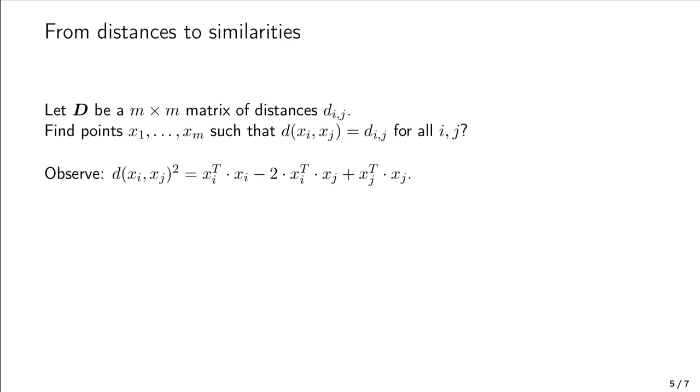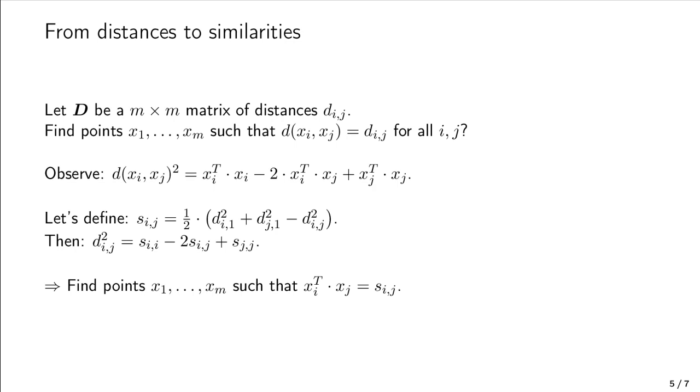Interestingly, we can do a similar rewrite for the matrix entry dij. In particular, we can define a similarity sij as one-half times the squared distance between i and the first point, plus the squared distance between j and the first point, minus the squared distance between i and j. Why this definition? The trick is that dij now corresponds exactly to sii minus 2sij plus sjj. Take a pencil and paper and recheck this for yourself if you'd like. We can now rephrase our drawing problem. We will be able to draw our distances if we can find points such that the product of xi and xj is exactly equal to sij.